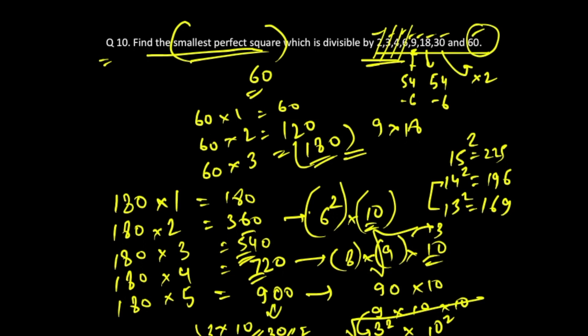Hence, 900 is a perfect square. Square root of 900 is 30. So 900 becomes your smallest perfect square which is also divisible by the given numbers. This is the way to find the answer to such problems.